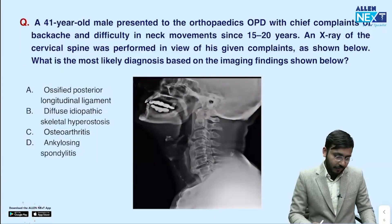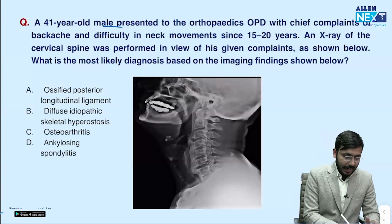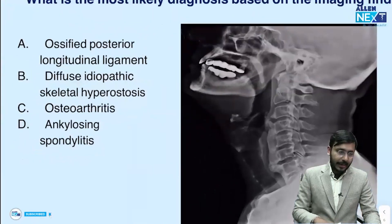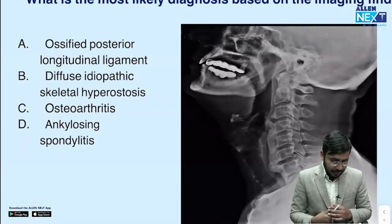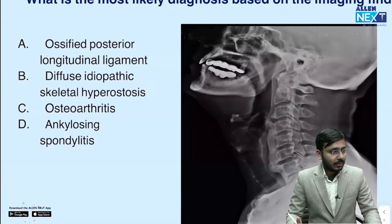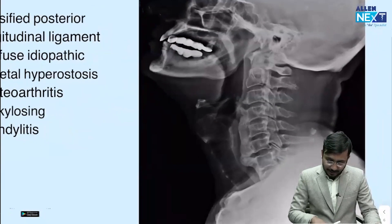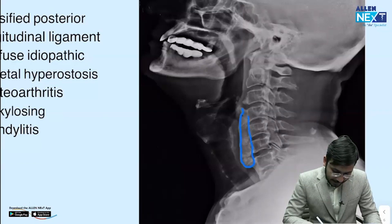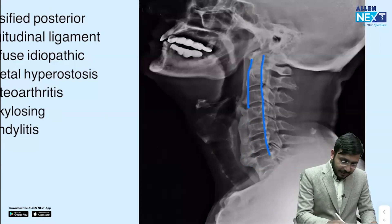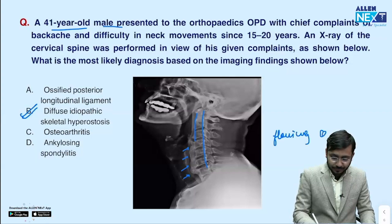Next question: a 41-year-old male presents to orthopedics with backache and difficulty in neck movement for 15 to 20 years. An X-ray of the cervical spine is performed. The most likely diagnosis — is it DISH, ankylosing spondylitis, OPLL, or osteoarthritis? The answer is DISH. We see flowing candle wax appearance of calcification along the anterior longitudinal ligament. The calcifications on the anterior aspect of the cervical spine are merging with each other — this is the flowing candle wax appearance.